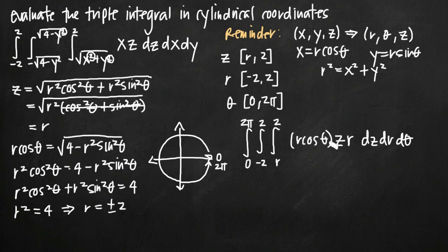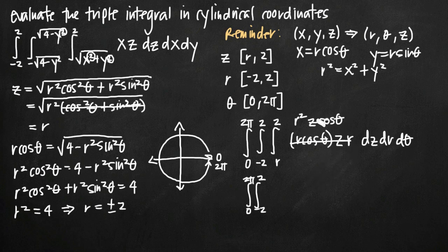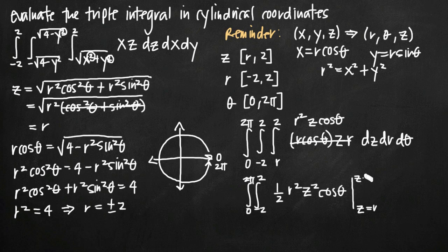Now it's just a matter of evaluating the integral. Since dz is on the inside, we integrate first with respect to z. We can simplify the r times r to r squared upfront: the integrand is r squared z cosine theta. Integrating with respect to z — holding r and theta as constants — we get one half r squared z squared cosine theta, to be evaluated on the interval z equals r to z equals 2.